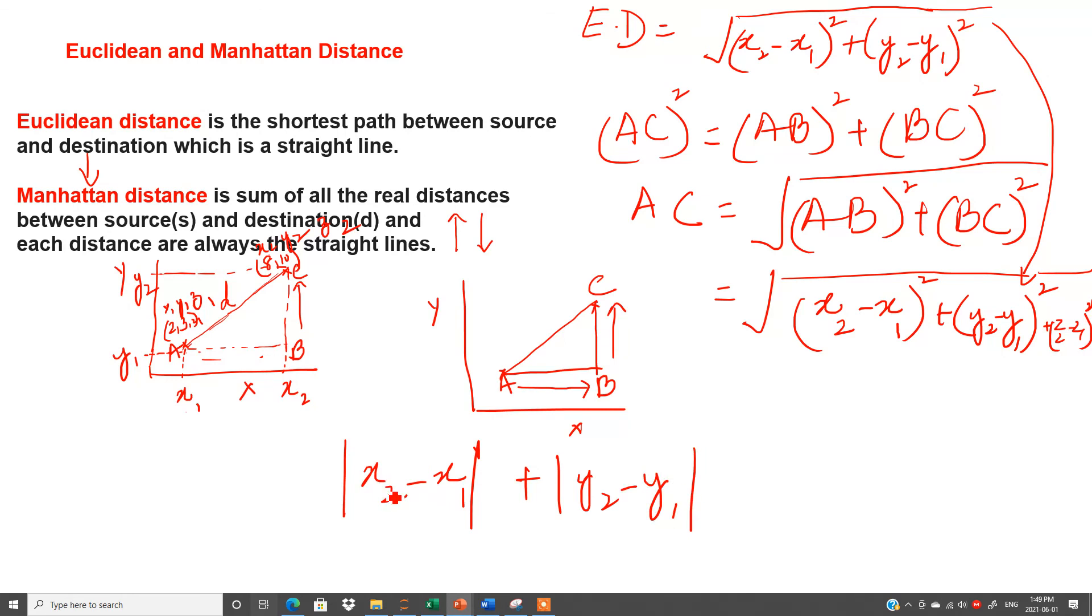Now again, the question is from where I have written x2 minus x1. See here, this is A, B, if I will make the projection here. So similarly, this is x2, this is y1, the projection on x-axis. Distance between A, B is x2 minus x1.